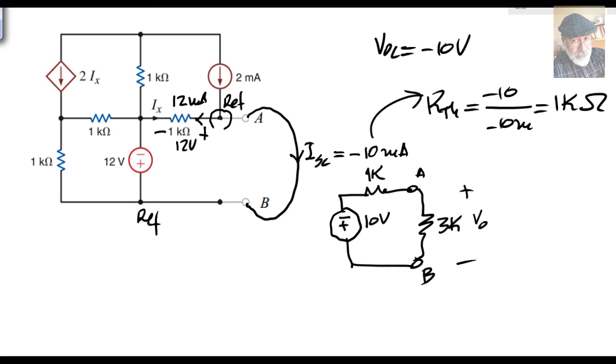Well, we can use simply a voltage divider and say that that voltage with that polarity would be negative 10 volts multiplied by the voltage divider. That would be negative 7 and a half volts. And that covers that part.